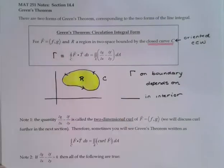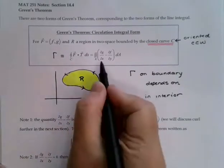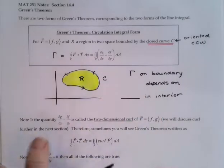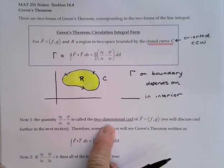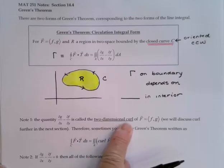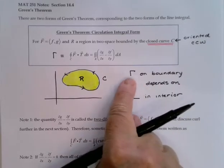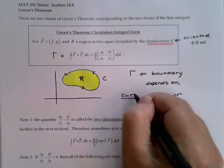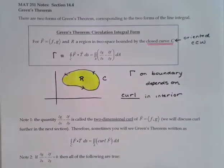We're going to give that something a name. This quantity, partial of g with respect to x minus partial of f with respect to y, is called the two-dimensional curl. Curl is a concept we'll actually meet in a more general sense in the next section. But for right now, we're just going to take the name and say the circulation on the boundary depends on the curl in the interior.